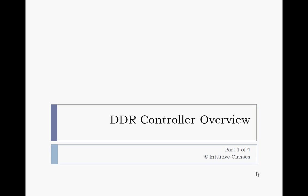Welcome to this session on DDR controller overview part 104 by Intuitive Classes. In this session we will talk about interface signaling of the DDR controller, both on the memory side and the system side. We will also talk about the parameters that designers have to constrain or understand when using DRAM interfaces. Finally, we will talk about how these parameters affect the bandwidth of a DRAM controller.